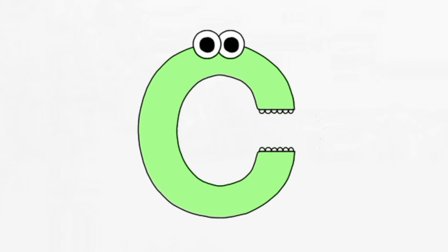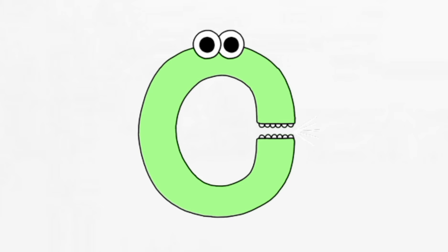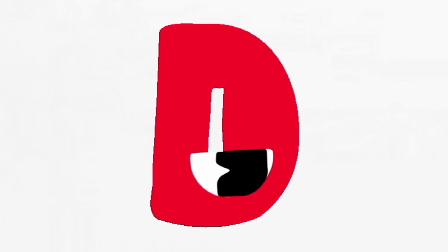I'm using green this time. Can you tell me what letter this is? Right, it's a C. A green C. I'm using red again for this one. Can you tell me what letter this is? Right, this is a D. A red D.